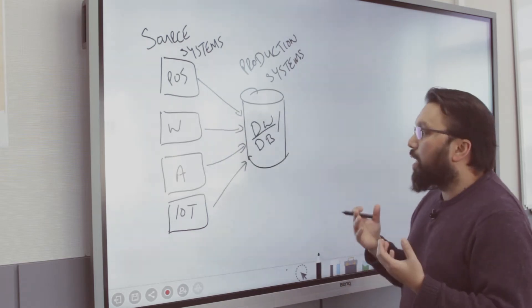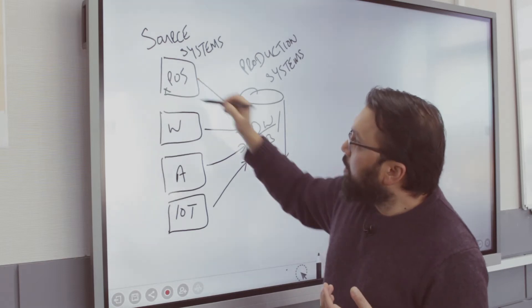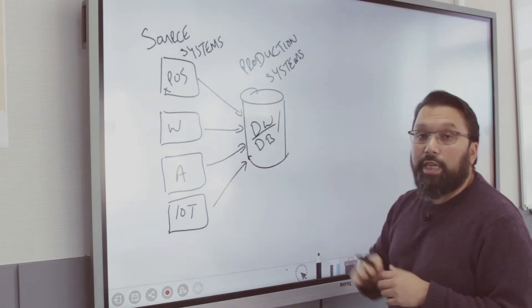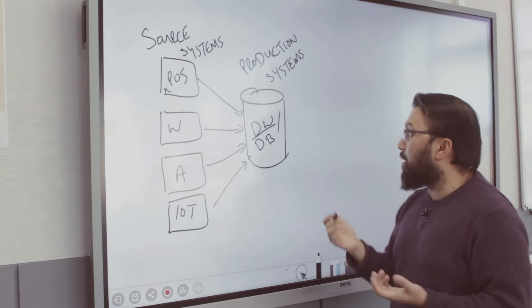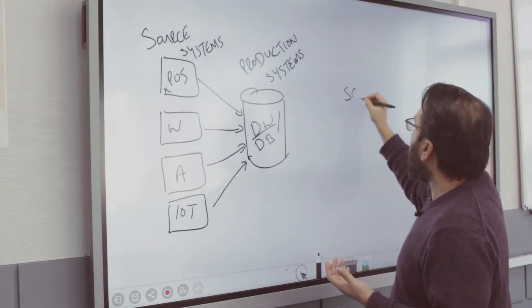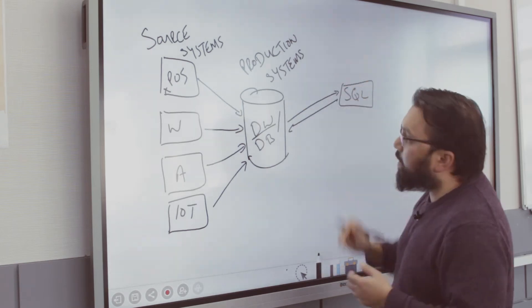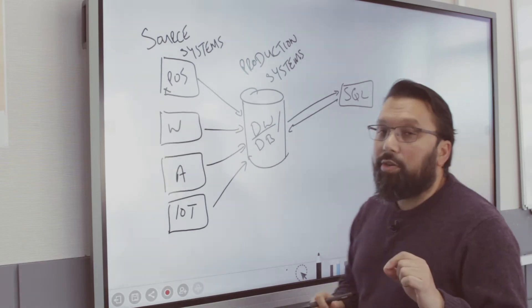Okay, then what happens is that as an analyst, if you wanted access to, let's say, the POS system, you could go into the production environment and query that data. Because it is a normal database, you could run SQL, for example, and you could query this database and get data back. But you wouldn't do that. Or you wouldn't normally do this.